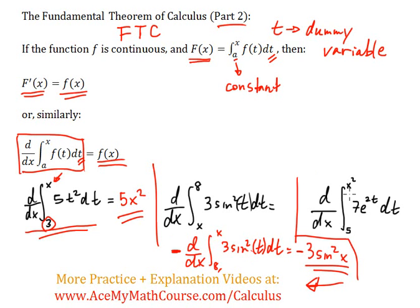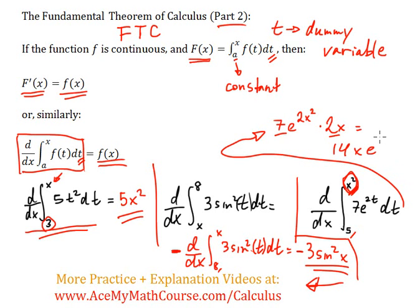interesting because we no longer have just X—we're going from 5 to X². In this case, we're actually going to have to use the chain rule. We're going from a constant to X², so we have 7e^(2x²) times the derivative of X², which is just 2x. So it's a little bit different when we have a function that's not just X. 7 times 2 is 14, so we have 14x·e^(2x²).